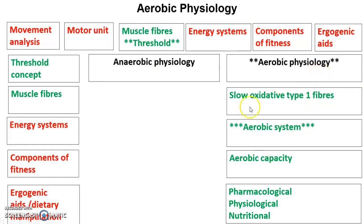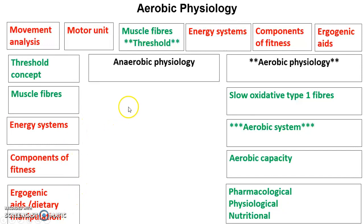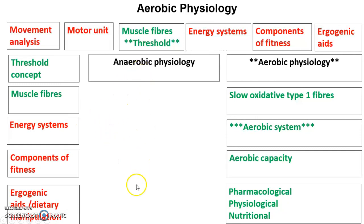As you can see, the first part of our year looked at anaerobic physiology. We had a look at different muscle fibres, energy systems, components of fitness and ergogenic aids linked to anaerobic athletes — sprinters, shot putters, discus, 400 metre runners — and we looked at those specifically with regard to the ATP-PC system and the glycolytic system.